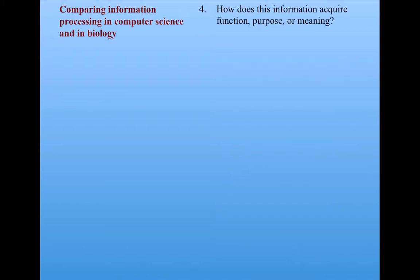Finally, an important question: How is it that this information that's being processed in these systems acquires some kind of function, or purpose, or even meaning? Well, we know in computer science that information processing is done for our own purposes. We run programs to compute things to help us do our jobs, or entertain us, or whatever purpose we have. Whereas in biology, there's no meaning or purpose from an external source.